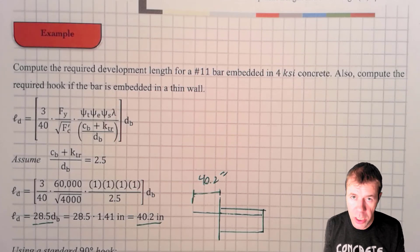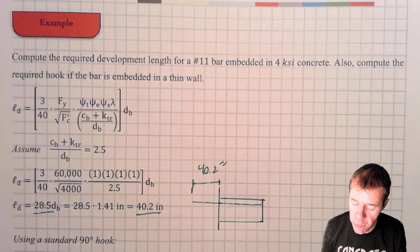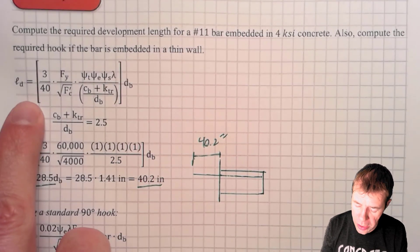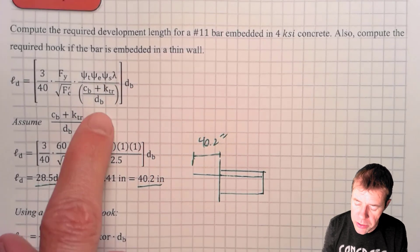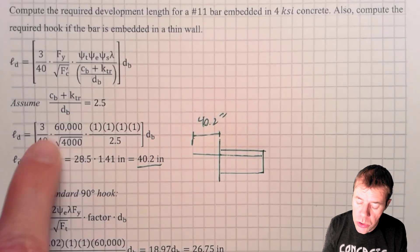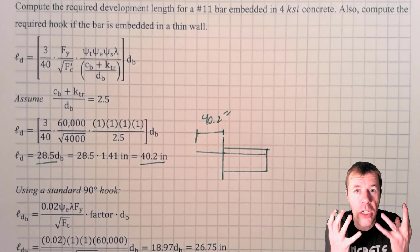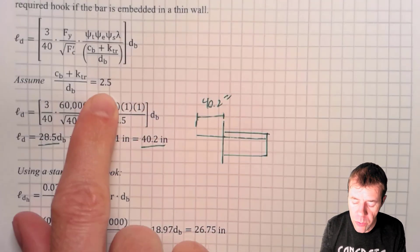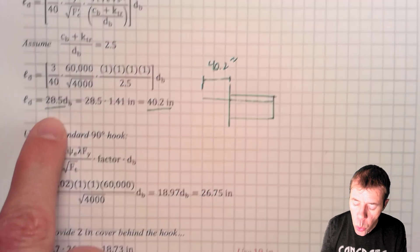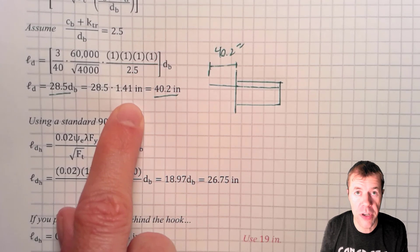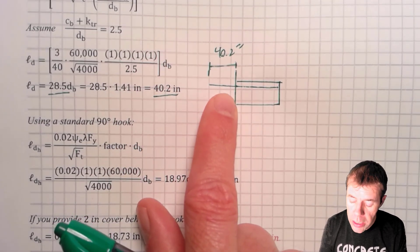In this second example, instead of going through all the detailed calculations, I'm going to use a number 11 bar with F'C of 4 KSI and FY of 60 KSI, and I'll assume C_B plus K_TR over D_B equals 2.5 to simplify. Using the same equation with Psi-T, Psi-E, Psi-S, and Lambda all equal to 1, and plugging in the constant 2.5, I get 28.5 times my bar diameter. For a number 11 bar with a diameter of 1.41 inches, that gives a required embedment length of 40.2 inches.